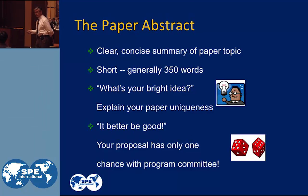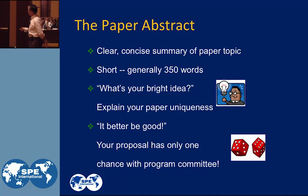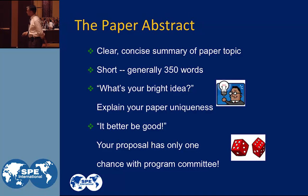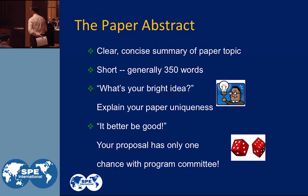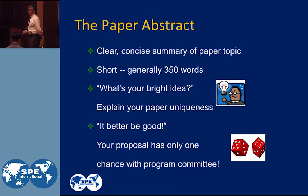In the abstract, you submit the abstract. What's the paper abstract? An abstract is a clear, concise summary of the paper topic. It's generally short — 350 words or less. And it really is: what is your bright idea? How do you explain your bright idea in 350 words or less?